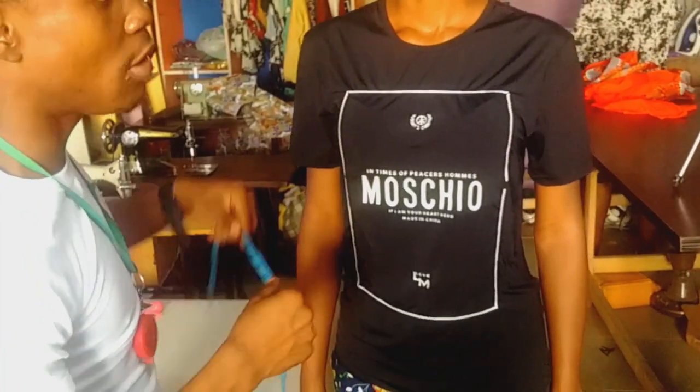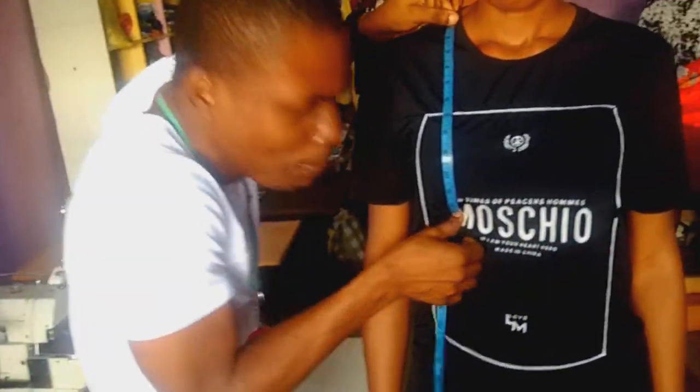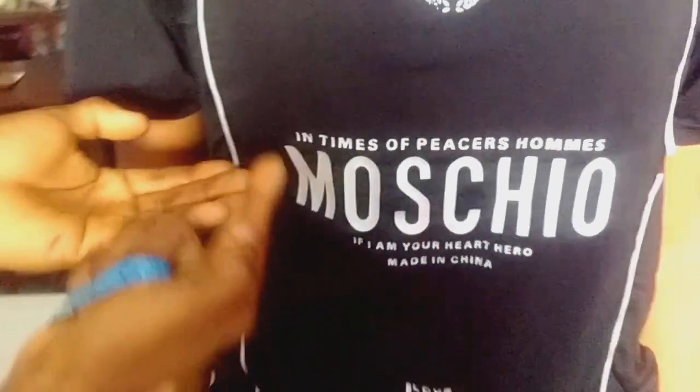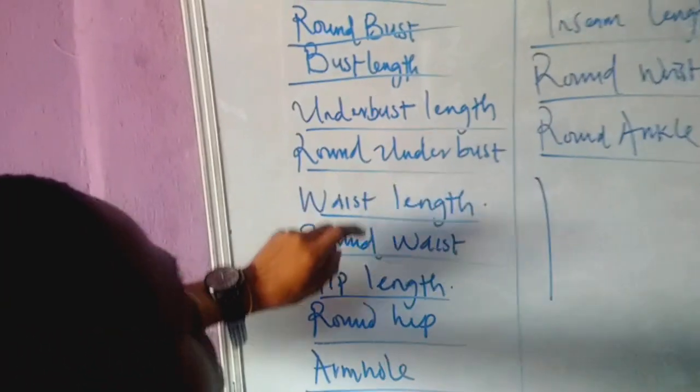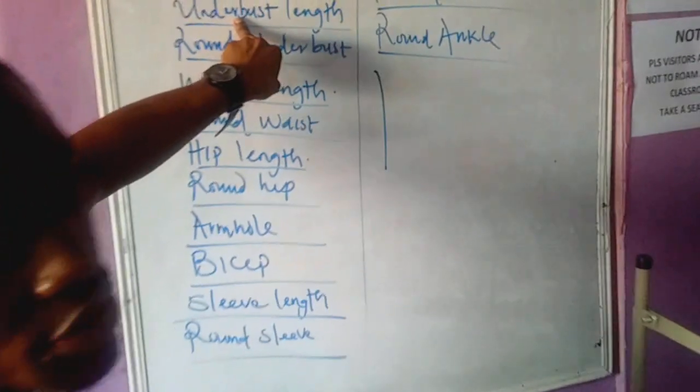Next is the under bust point. Some people call it 'half left' or different names, but I call it the under bust point. It is measured from the shoulder, passing through the nipple, down to the base of the under bust. So her under bust length in this case is 13 inches — yes, 13 inches. After getting that under bust length, you then get the round under bust.